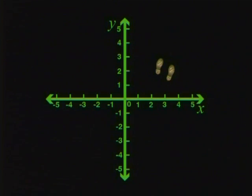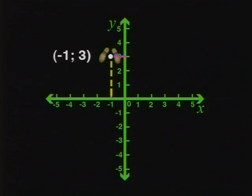Go for it. How about this one? If I trace this point back to the x-axis, its x-coordinate is negative 1, and its y-coordinate is 3. So this is the point (-1;3). That was really good.